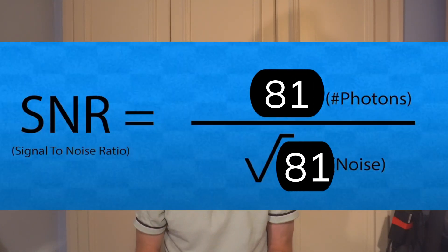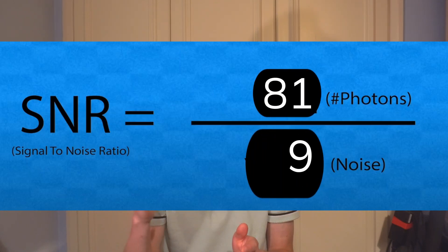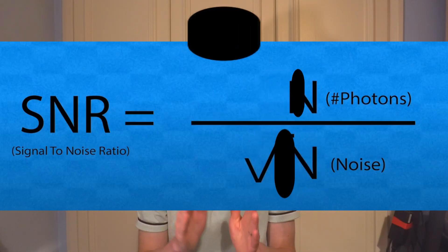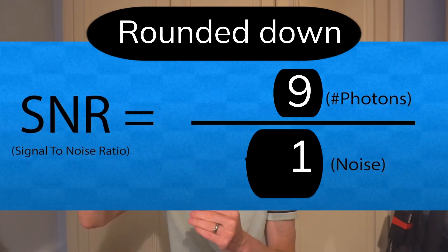Now if we upgrade to a three-by-three pixel sensor under the same conditions, it will collect 81 photons per second over that 3x3 array. The signal-to-noise ratio is 81 divided by the square root of 81, which is nine — so 81 over nine gives a signal-to-noise ratio of 9:1, nine parts signal to one part noise. In summary, the three-by-three pixel sensor achieves a signal-to-noise ratio three times higher than the single pixel sensor.